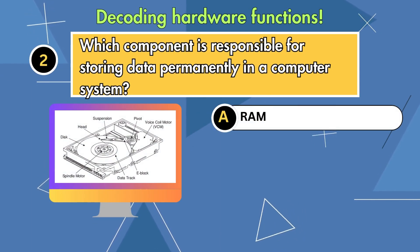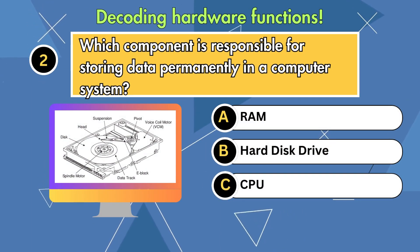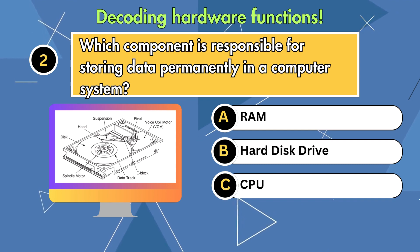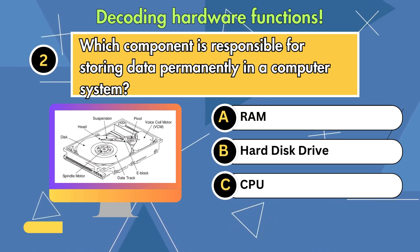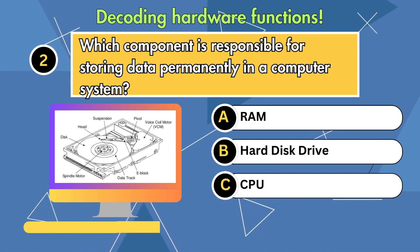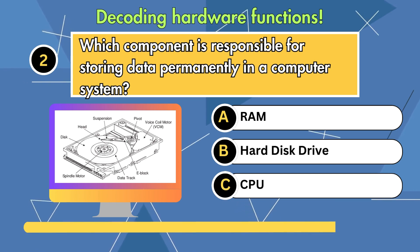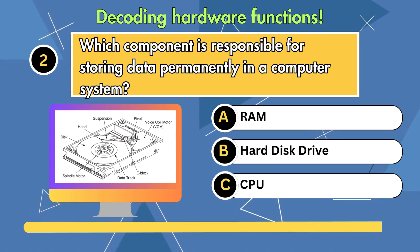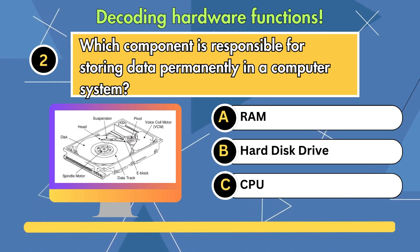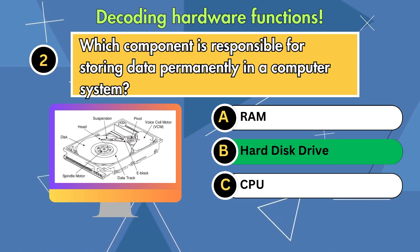Question 2. Which component is responsible for storing data permanently in a computer system? Option 1: RAM. Option 2: Hard disk drive. Option 3: CPU. Answer is hard disk drive.